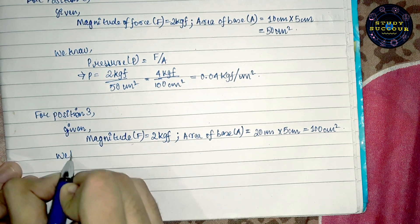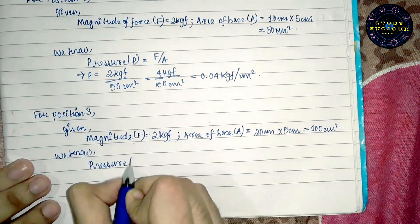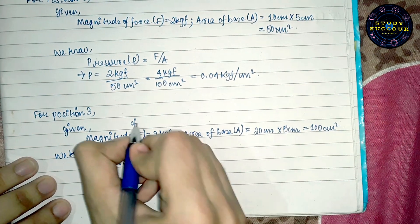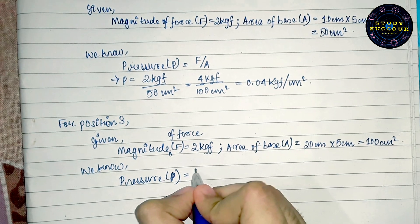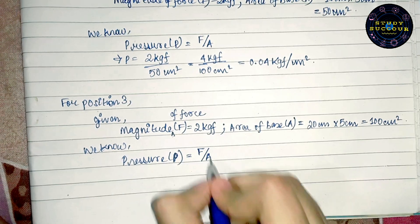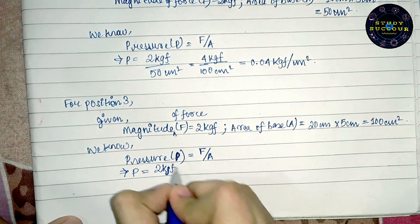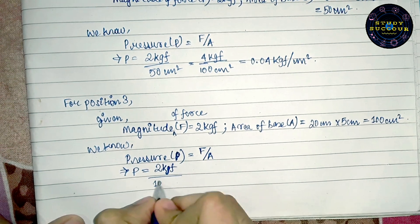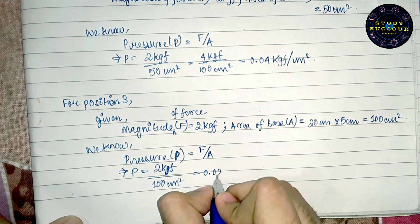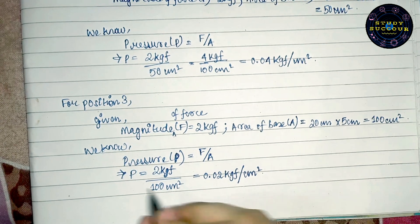Once again, we know pressure P is equal to magnitude of force F by area of base A. So, pressure P equals 2 kgf divided by 100 cm², which is also equals to 0.02 kgf per cm². This is our final answer.